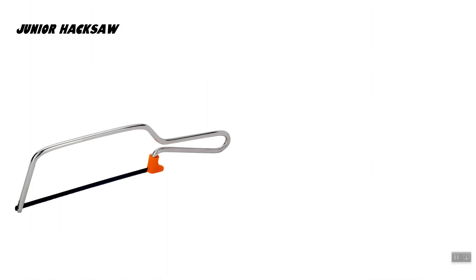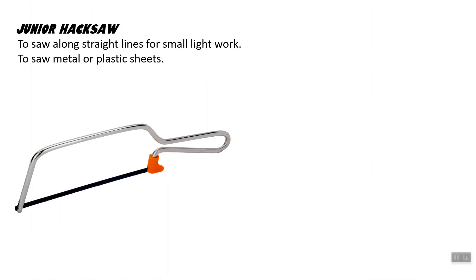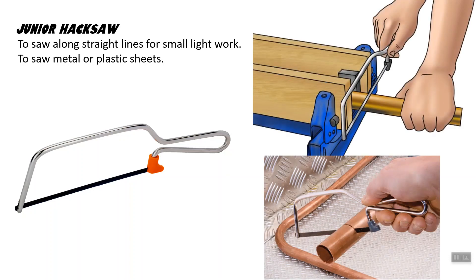Another type of saw is the junior hack saw. Like the hack saw, it is used to cut metals and plastic, but this one is smaller. It is much smaller and is used to cut smaller parts into metals or plastic — to saw along straight lines for small light work. For example, to cut copper pipes for plumbing purposes, we use a junior hack saw.